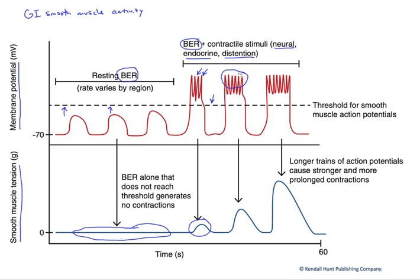The greater the frequency trains, the longer the string of action potentials in each of these cycles, the stronger the contraction will be. Therefore, the more neural and endocrine and distension input we have, the stronger the contractions we might get, and the more forcefully we would propel the food along the track in these peristaltic waves.